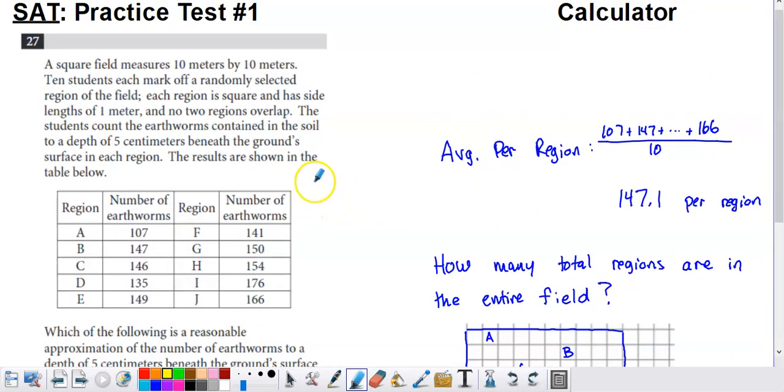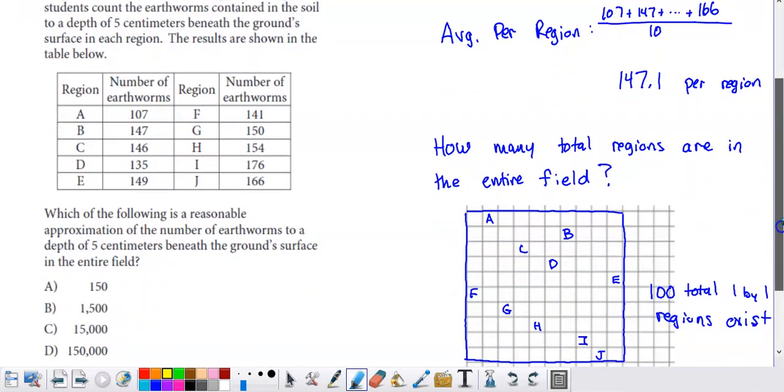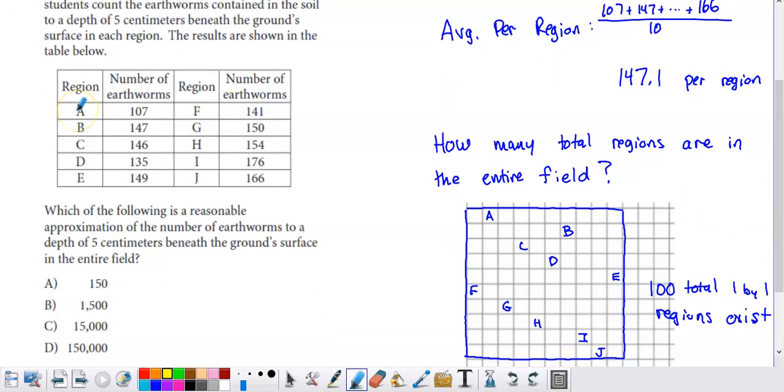So what these students are going to do is they're going to go and dig down into the soil to a depth of 5 centimeters. And they are going to count how many earthworms the soil contained. And so the first student who chose to do this for region A, they dug down, they counted 107 earthworms. You see that for the rest of the students. Obviously, the numbers are kind of close, but none are exactly the same. And that's what's to be expected.